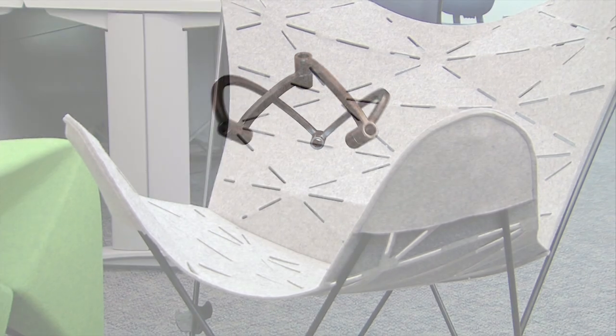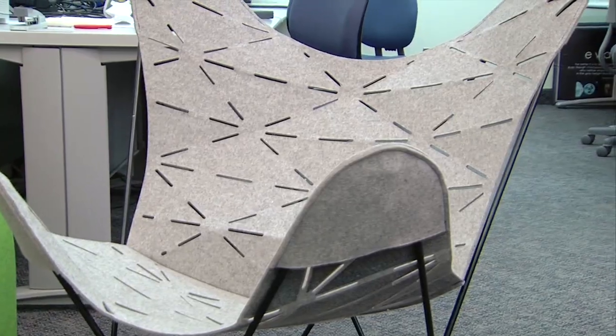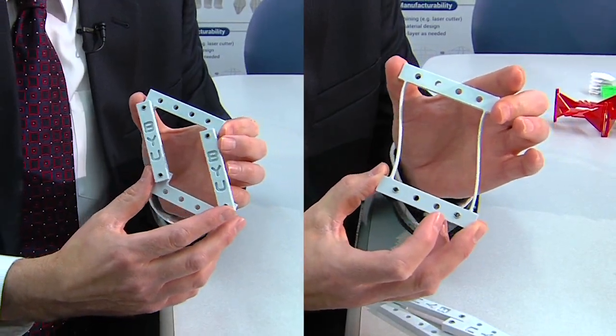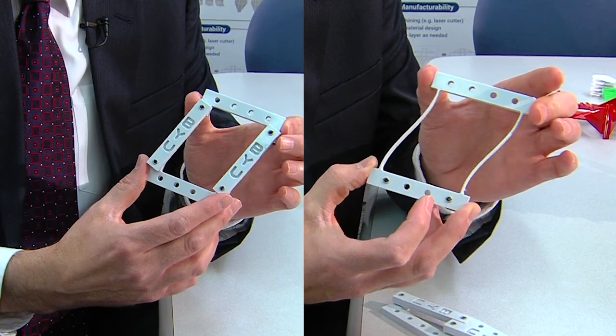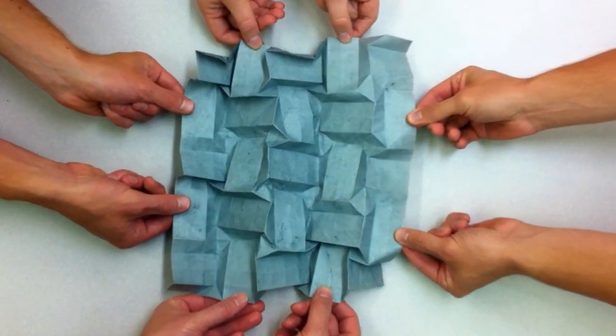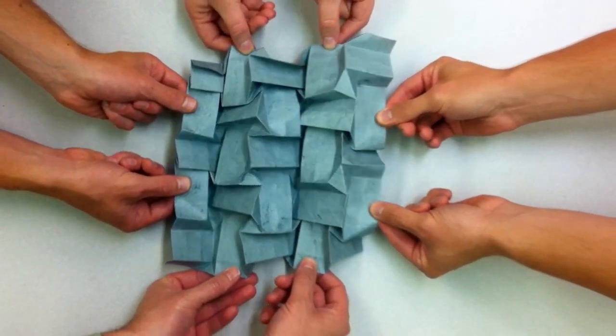from space hardware to home furnishings. We do things we call compliant mechanisms, which are things that get their motion from things that bend and deflect instead of hinges and bearings. And eventually we realized origami that's moving is getting its motion from the deflection of paper. It's a compliant mechanism.